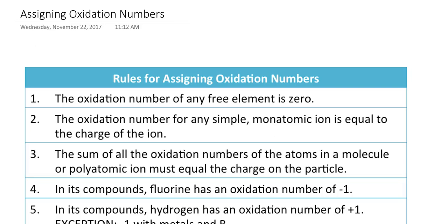Hello everyone. In this pre-lecture tutorial we're going to be covering a supplemental topic to chapter 6, where we're going to talk about an alternative way to name covalent compounds. As we learned just prior to this tutorial, we can name covalent compounds using the prefix system — prefixes like mono, di, and tri to indicate how many of each atom is present. But there is another way to name covalent compounds, and it involves calculating what we call oxidation numbers for all atoms within the molecular formula.